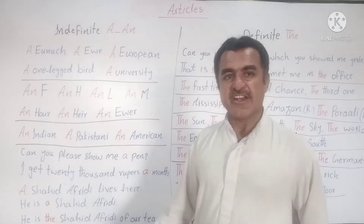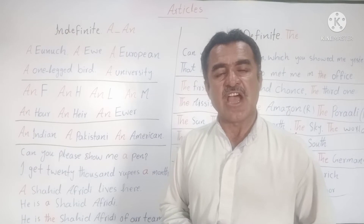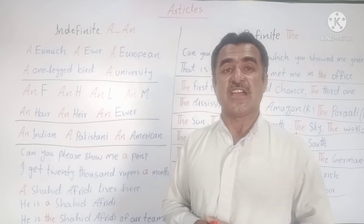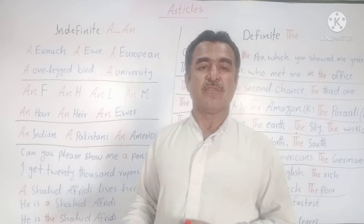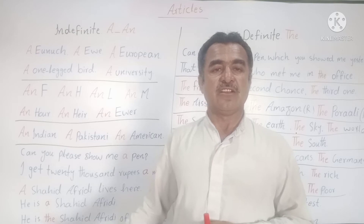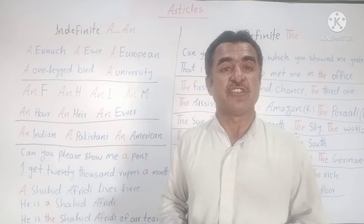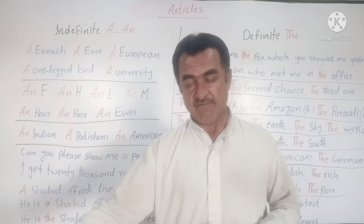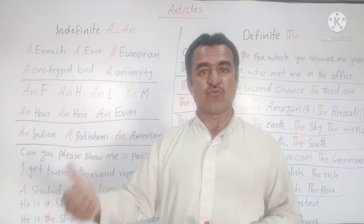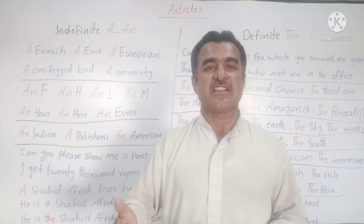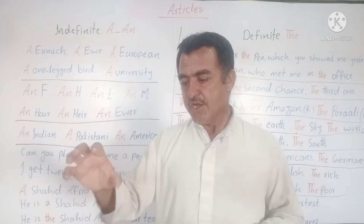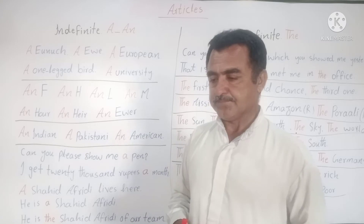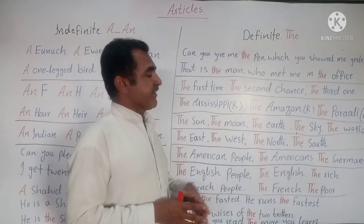The third sentence with the definite article: 'He is the Shahid Afridi of our team.' This means out of the 11 players, we have picked him for this quality and named him Shahid Afridi. His real name is not Shahid Afridi, but he plays very well among those players — he is the Shahid Afridi of our team.